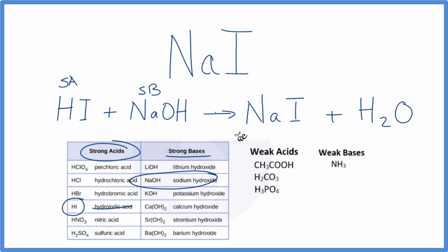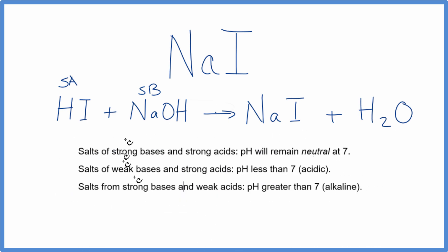So now we know the strengths and we can figure out whether NaI is going to be acidic, basic, or neutral. So based on our rules here, HI is a strong acid, so it could be this or this. NaOH is a strong base. So we get strong base, strong acid, pH will remain neutral at about 7. So when we dissolve NaI in water, we expect the solution to be neutral with the pH about 7, according to these rules here.